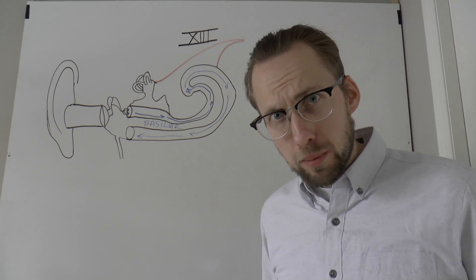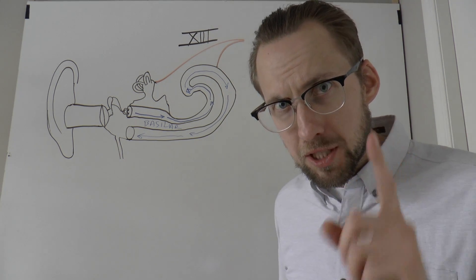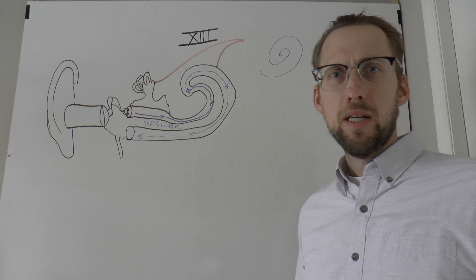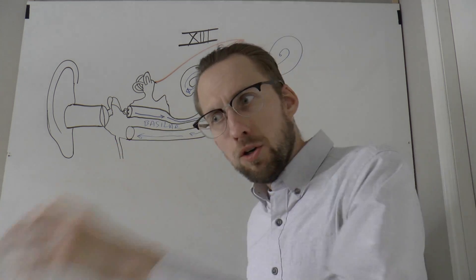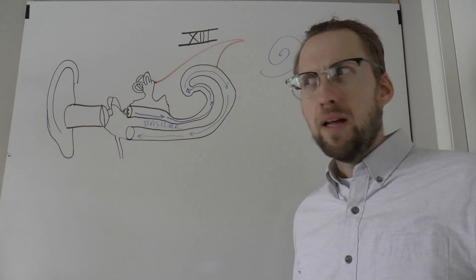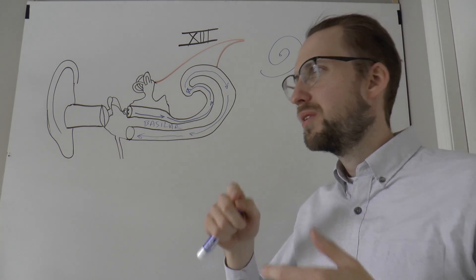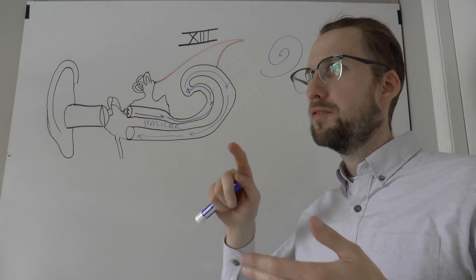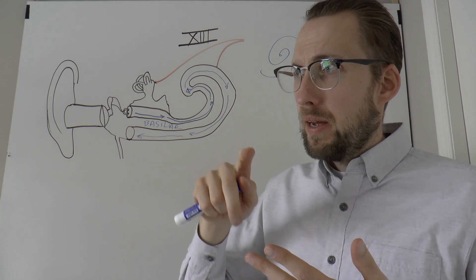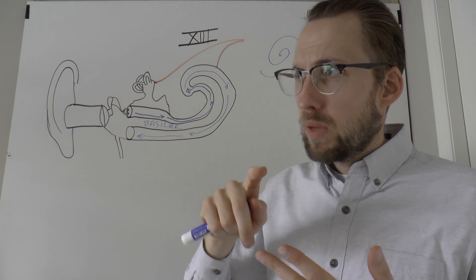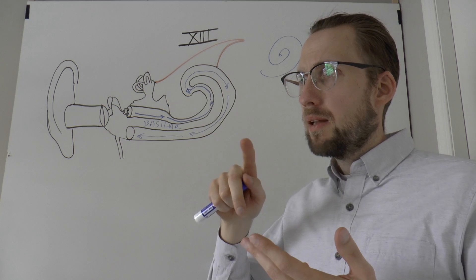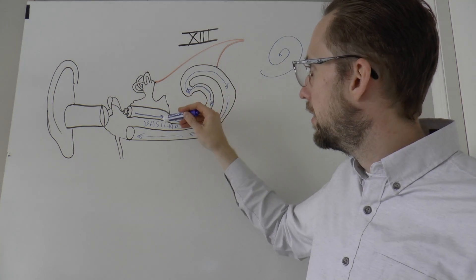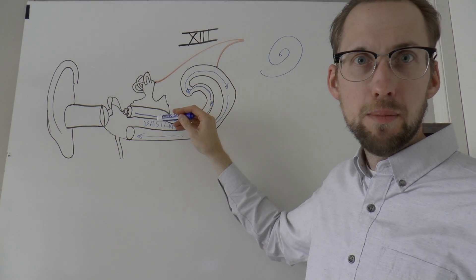That auditory branch of the vestibulocochlear nerve provides input to your brain — the cochlear nucleus, superior olivary nucleus, inferior colliculi. But for our purposes: hair cells in the basilar membrane. That's how simple we're going to keep it.